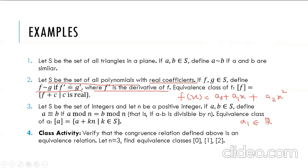If we take the same polynomial f, its derivative is equal to itself, so the reflexive property holds. If the derivative of f equals the derivative of g, then the derivative of g also equals the derivative of f, so it is symmetric. Similarly, if f′ = g′ and g′ = h′, then f′ = h′, so it is transitive. Hence we can easily prove this relation is an equivalence relation.